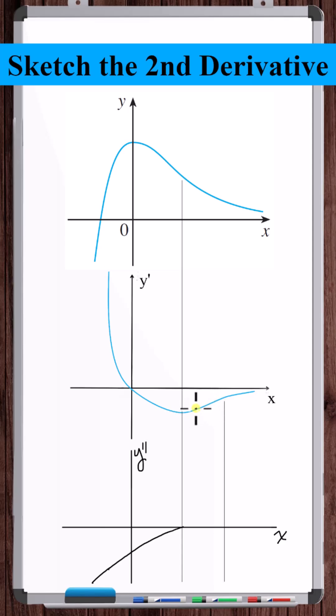From this point to this point, the slope of the y prime graph is positive and increasing. The concavity of the function is increasing in this region as well.